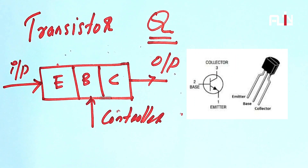The transistor is used to amplify current. It can also be used as an oscillator.